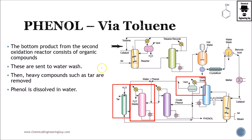The bottom product from the second oxidation reactor consists of organic compounds. Most of these compounds are rich in phenol with some leftovers of benzoic acid and so on. The best approach is to recycle here, mix it with the other organic-rich material, and treat this as crude phenol. We want to ensure that crude phenol is purified to pure phenol.